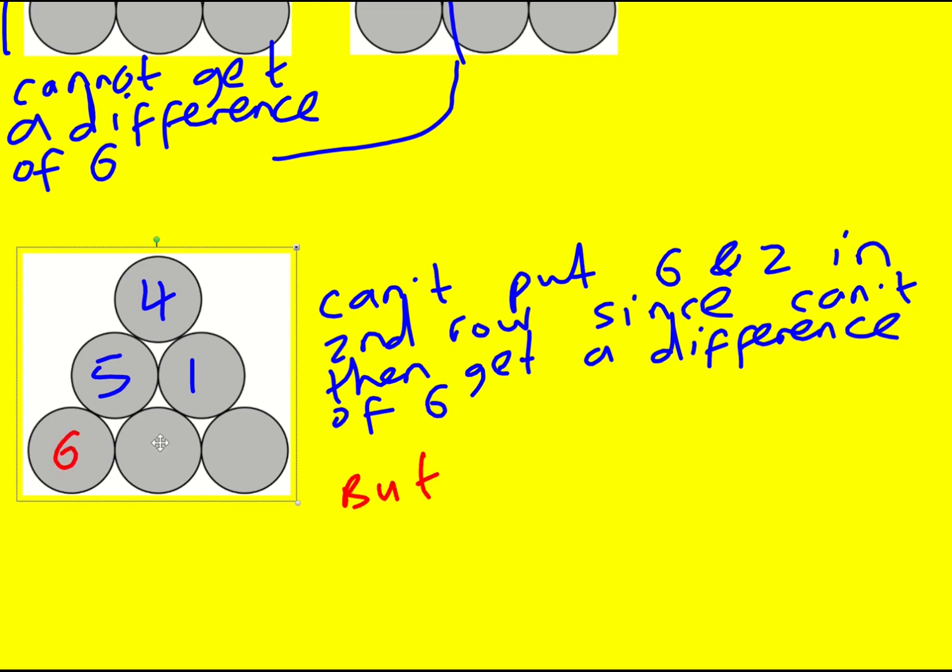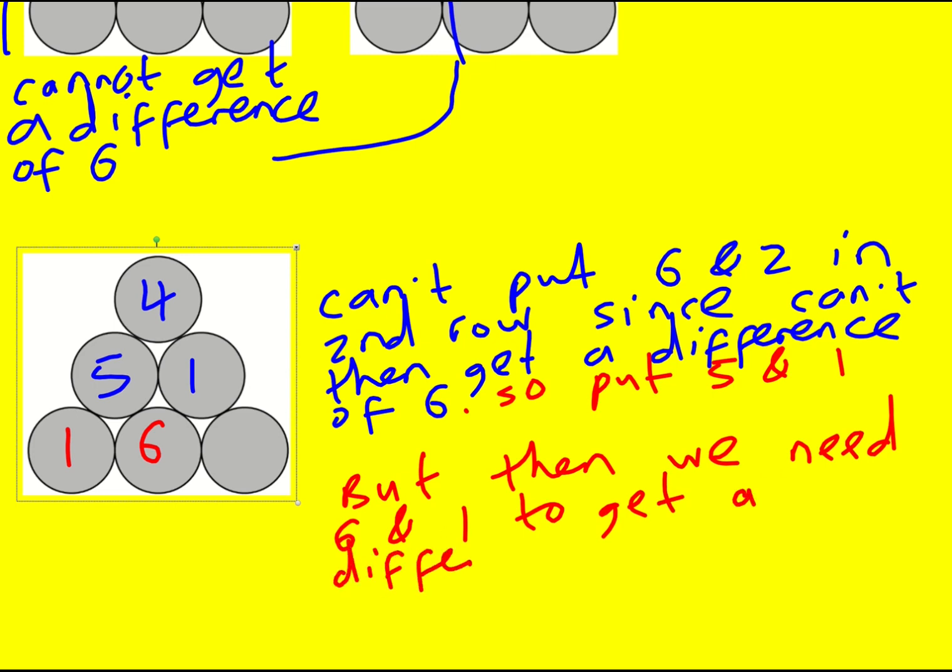But we'll then need 6 and 1 or 1 and 6. If we put 5 and 1, then we need 6 and 1. We need 6 to get a difference of 5, which we can't do.